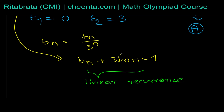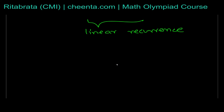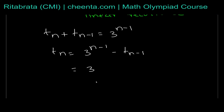This is a linear recurrence, solvable by generating functions or characteristic equations. But a simpler approach is to iterate: from t_n plus t_{n-1} equals 3^{n-1}, we substitute t_{n-1} in terms of t_{n-2}, then t_{n-2} in terms of t_{n-3}, and so on, until we reach the base case t_1. So t_n equals 3^{n-1} minus t_{n-1}, and replacing t_{n-1} gives 3^{n-1} minus 3^{n-2} plus t_{n-2}, and so forth.